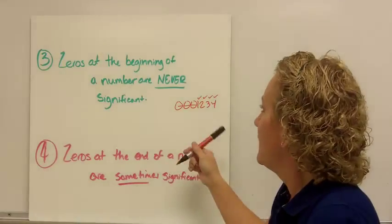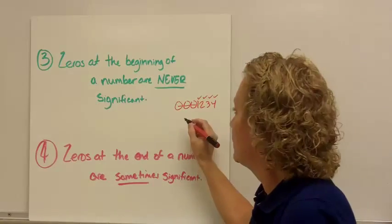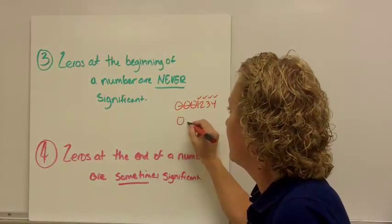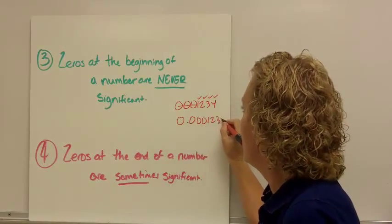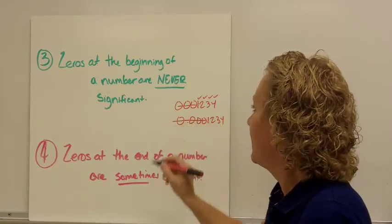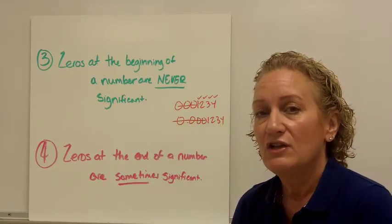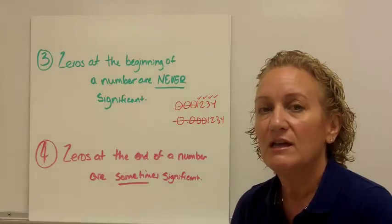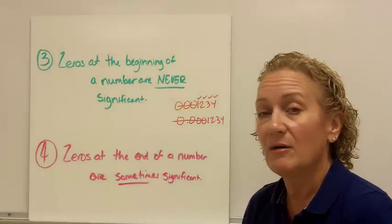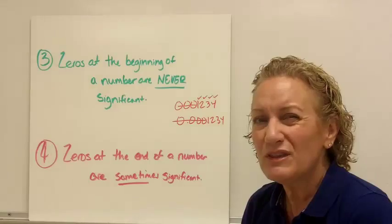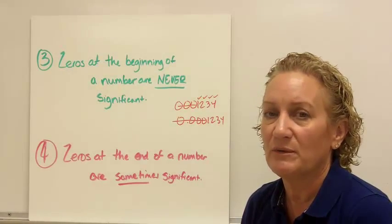4 significant figures. Now, it doesn't matter if there's a decimal in it or not. I can have 0.0001234 and those leading zeros are not significant — you have 4 significant figures. So, zeros at the beginning of a number are never significant. Zeros at the end of the number — that's where things get a little bit tricky, and that's one we want to spend a little bit of time on.